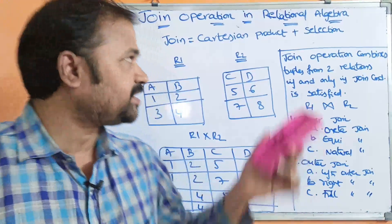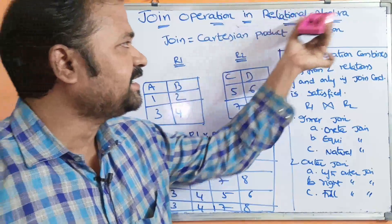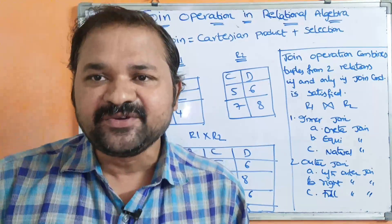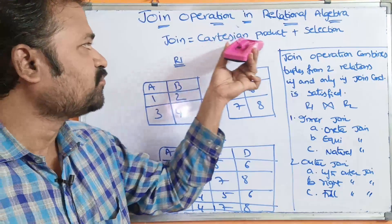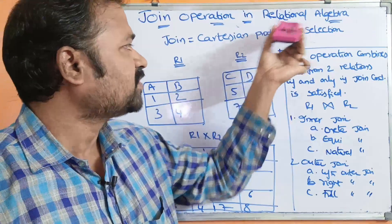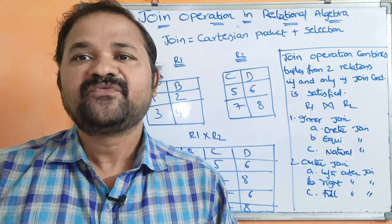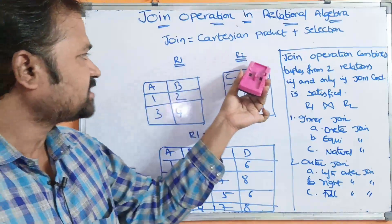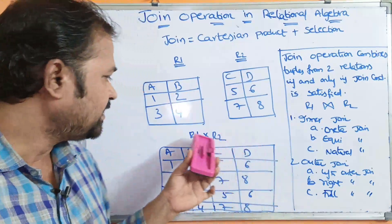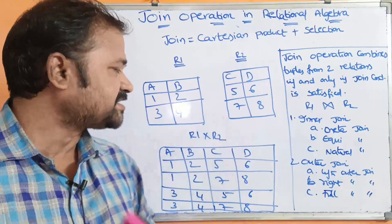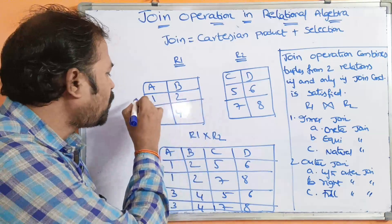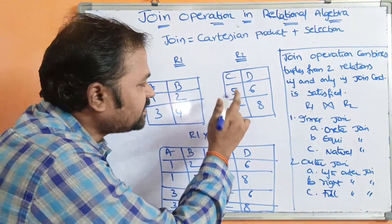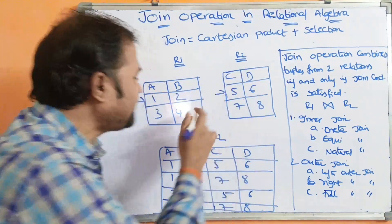Let us discuss about join operation in relational algebra. Join operation is mainly useful in order to overcome the limitations of cartesian product. We know what is a cartesian product. Let we have two relations such as R1 and R2. Then R1 cartesian product R2 is nothing but every row of the first table is combined with all the rows of the second table.